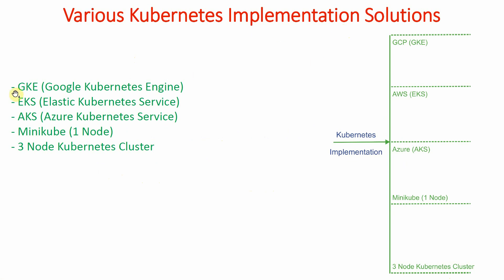The first option is Google Kubernetes Engine (GKE) on Google Cloud, which can be used for creating a cluster. Then we have Elastic Kubernetes Service (EKS) on AWS, and Azure Kubernetes Service (AKS) on Microsoft Cloud. We can also implement an experimental one-node Kubernetes cluster using Minikube, or a full three-node Kubernetes cluster.